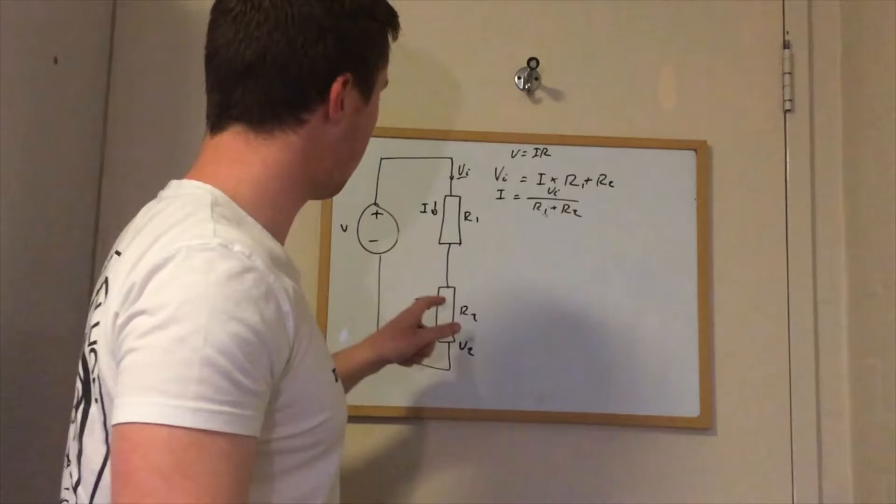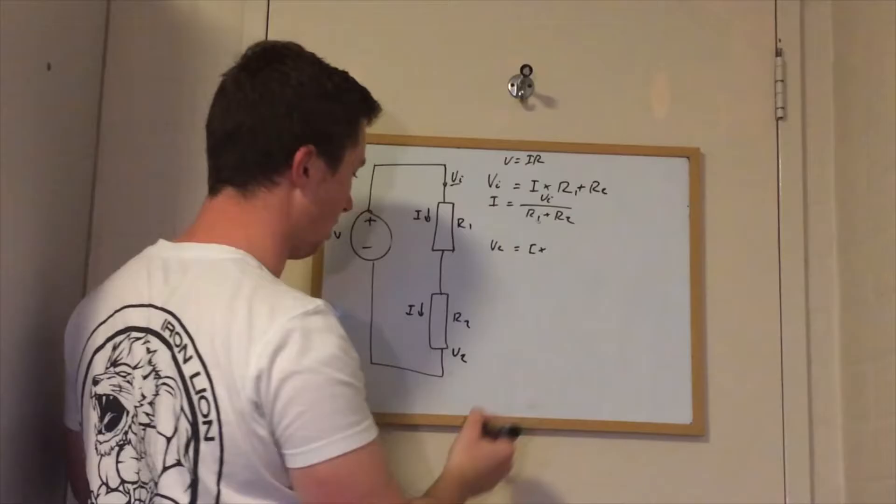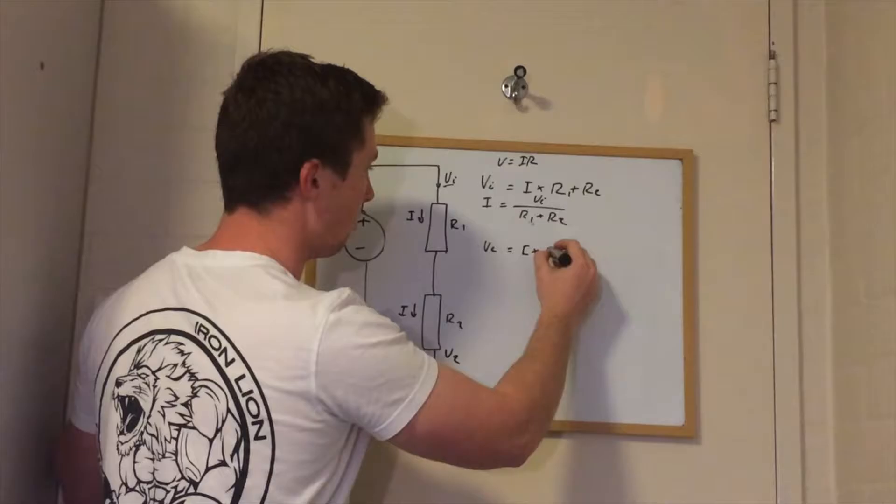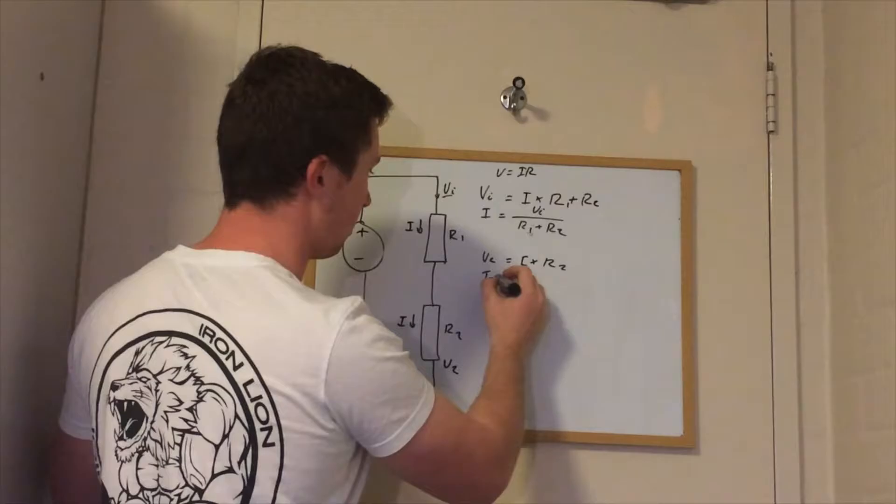And if we do the same for the second voltage, V2 equals I multiplied by R2, because we're just looking at the voltage drop across this resistor.